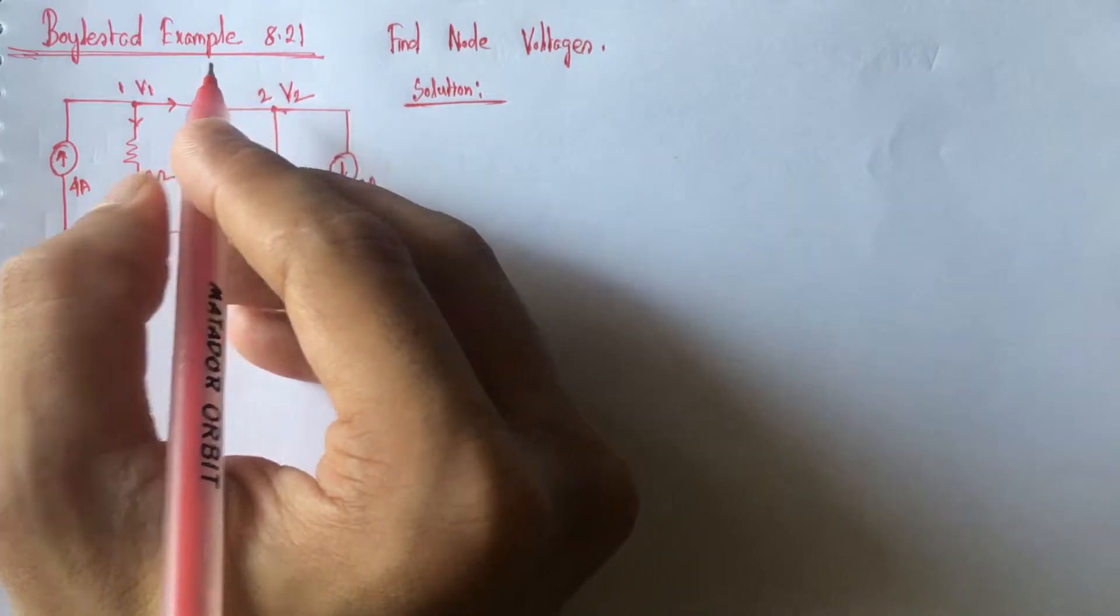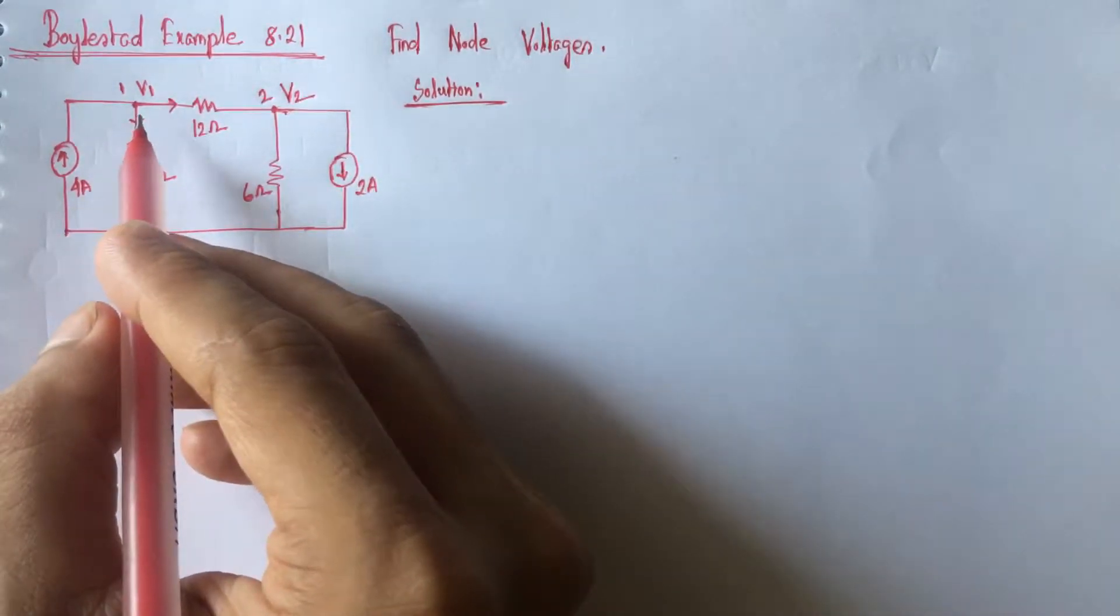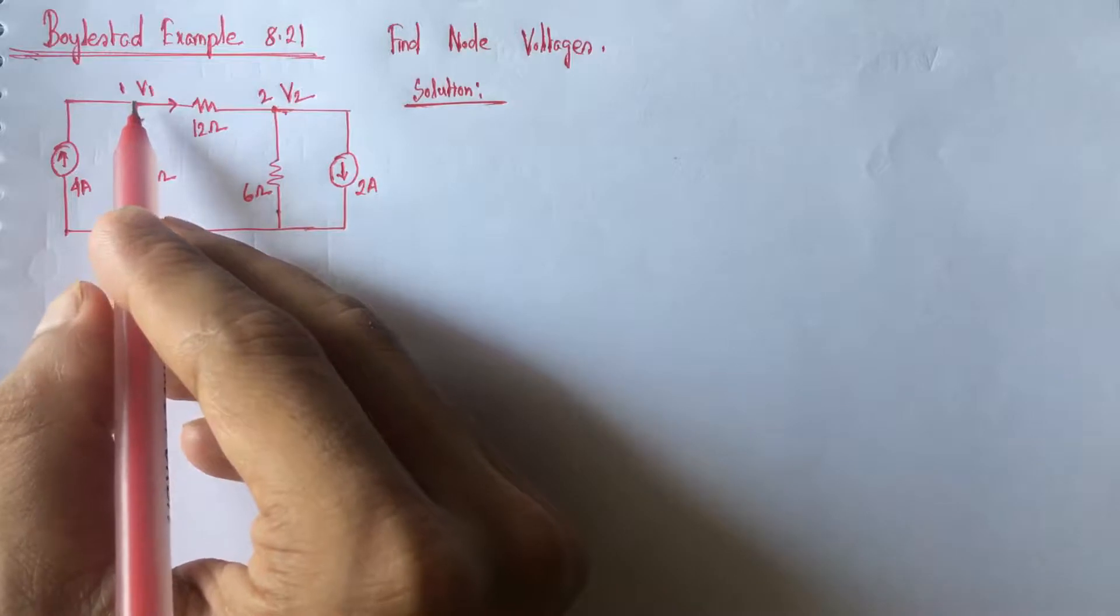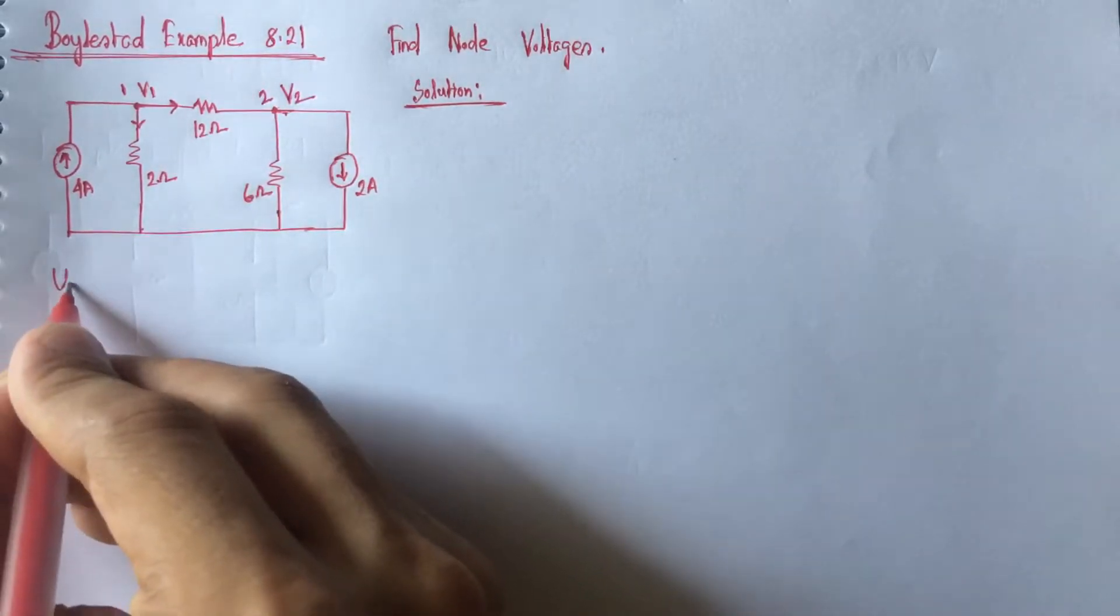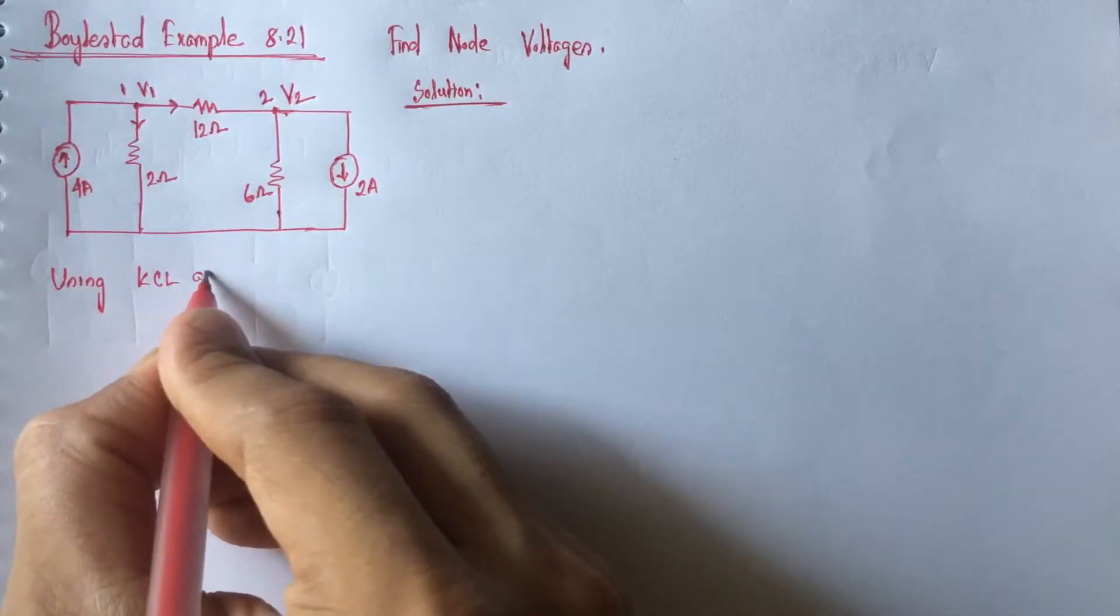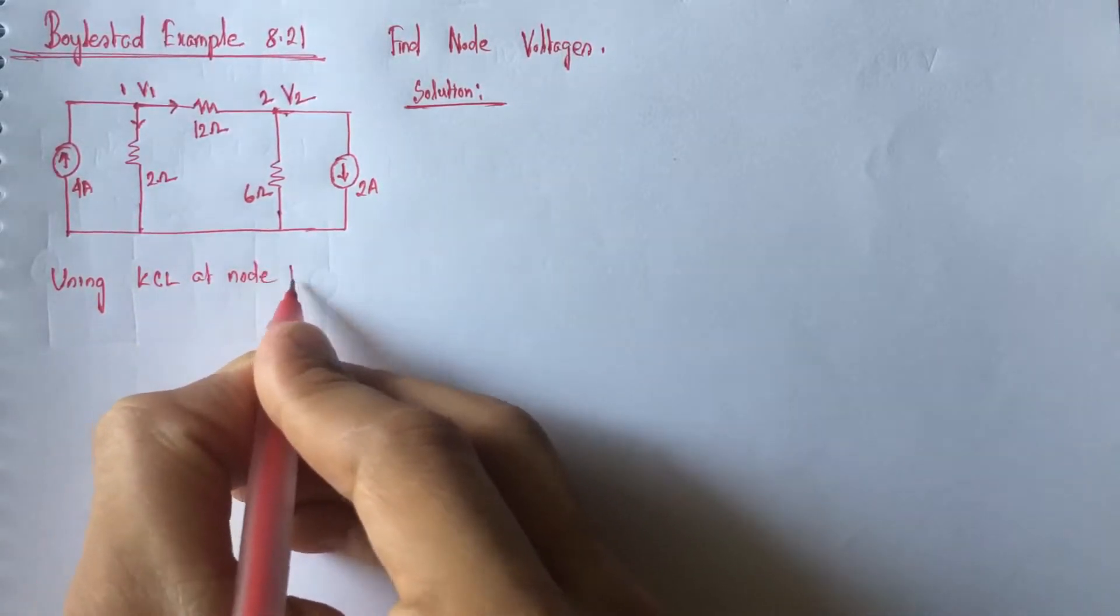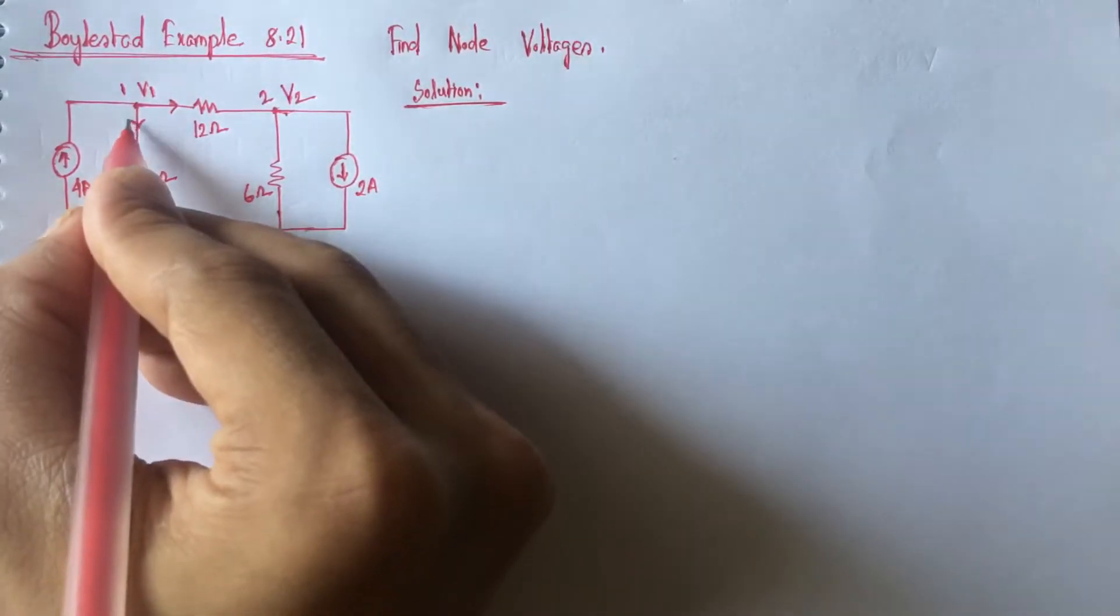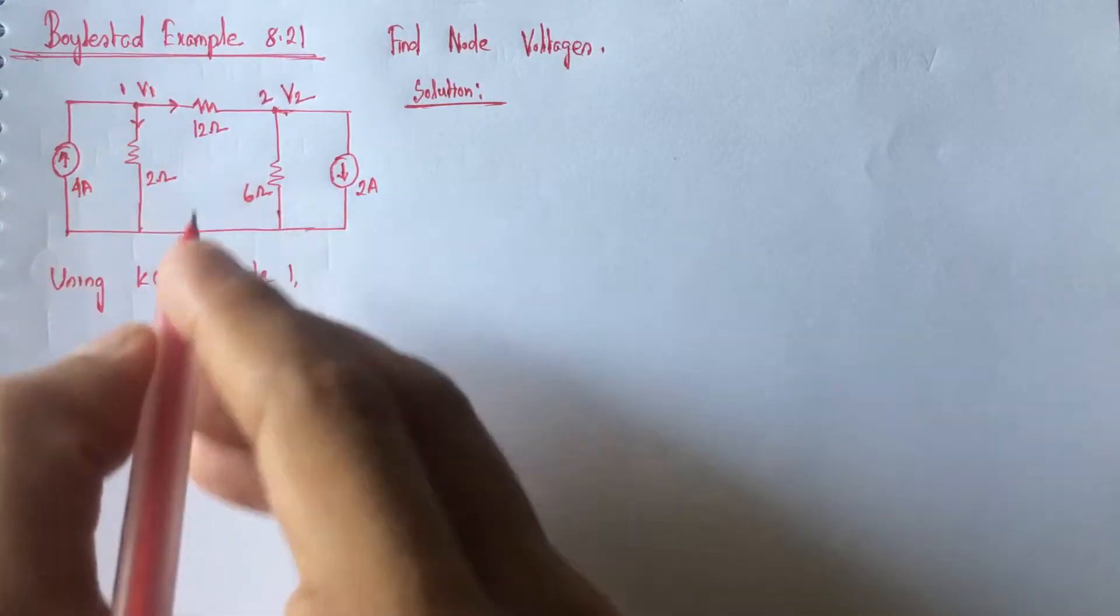then by using Kirchhoff's current law, we can find out the equation for solving V1. So, using Kirchhoff at node 1, we get this current is leaving node 1.